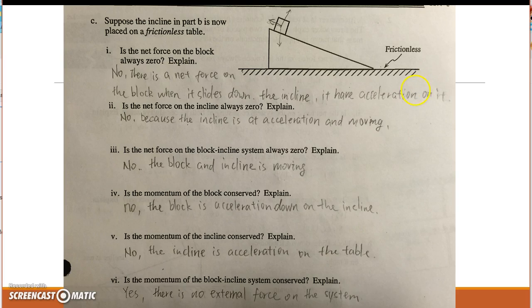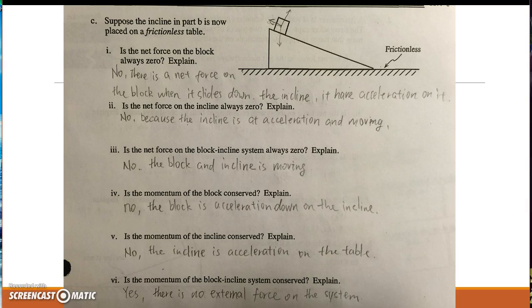The net force on the incline is not always zero because the incline has acceleration and is moving. Question 3: the net force on the block and incline system is not zero because the blocks and incline are moving since the table is frictionless. The momentum of the block is not conserved because the block accelerates down the incline. The momentum of the table and incline system is conserved because there is no external force on the system.